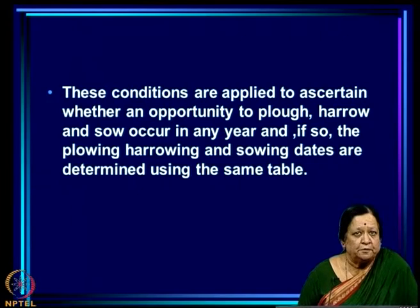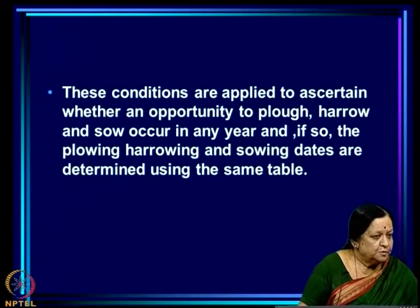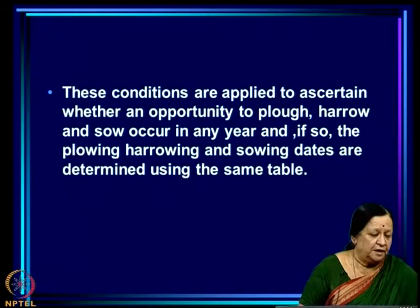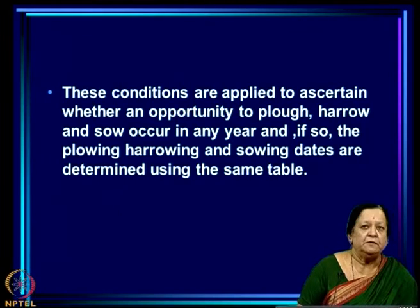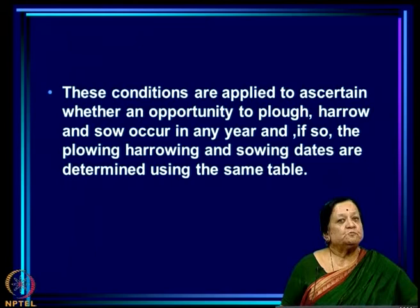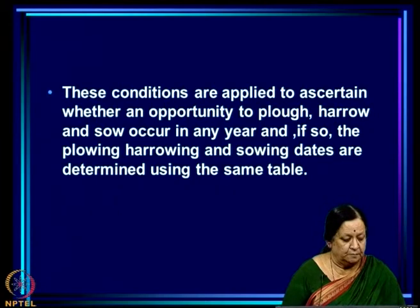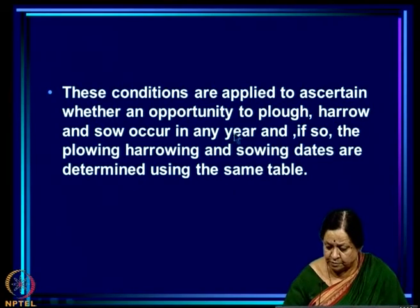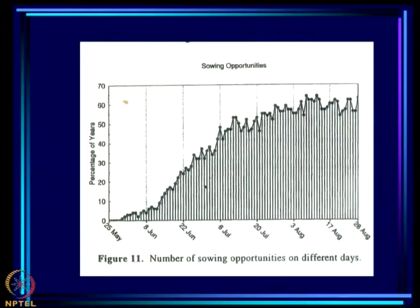These conditions are applied to ascertain whether an opportunity to plough, harrow, and sow occurs in any year, and if so, the ploughing, harrowing, and sowing dates are determined. We collected from farmers the conditions and criteria that must be met — all defined in terms of soil moisture. To generate soil moisture from rainfall we have a simple hydrological model which works reasonably well. When those conditions are satisfied, we call that the ploughing, harrowing, or sowing date; if no opportunity arises, the cultivation is abandoned.